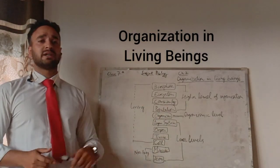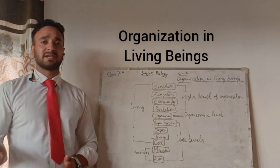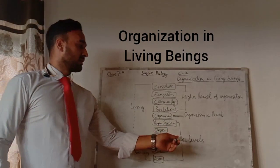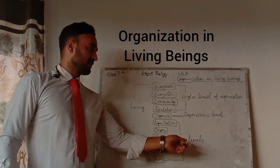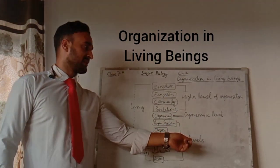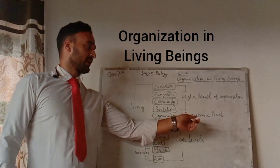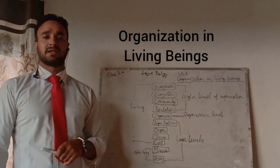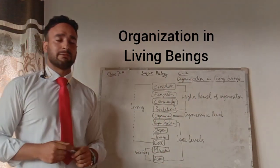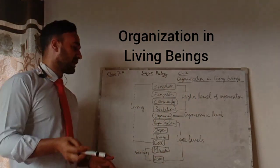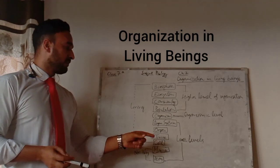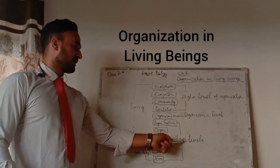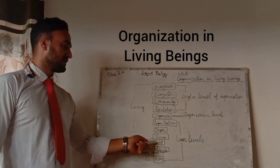Now similarly, there are different levels of organization in living beings. There are the lower levels of organization, the organism level of organization, and higher levels of organization. So basically there are three levels. Let's start with the lower levels of organization, which begins with the cell.